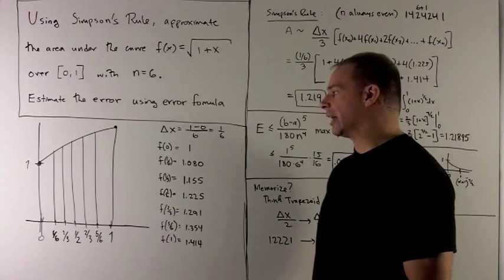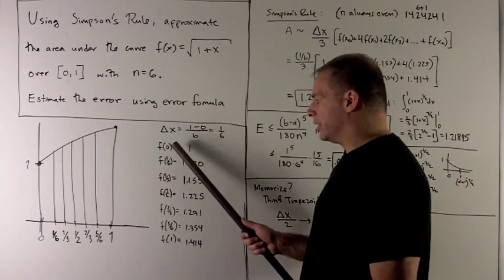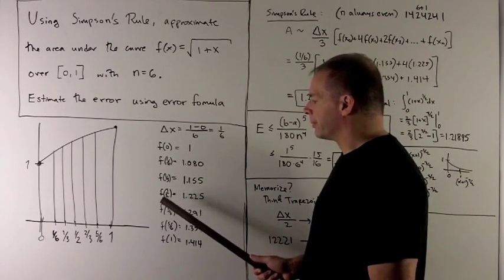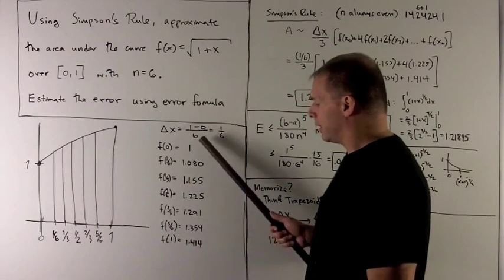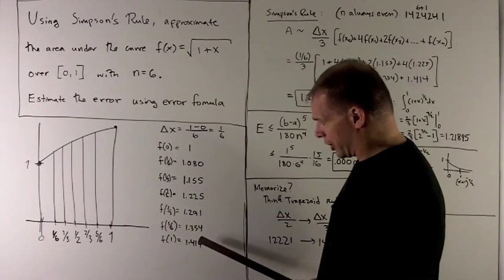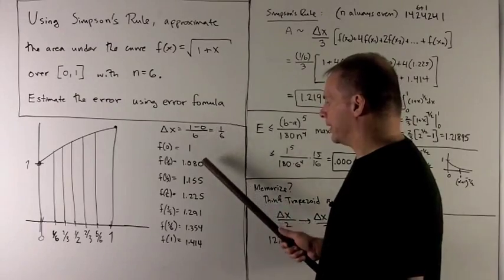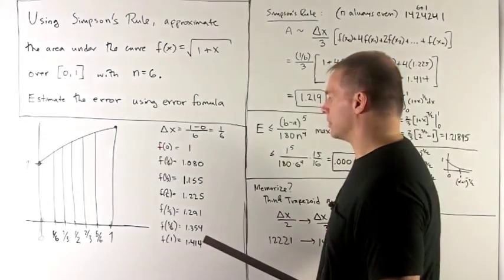I break out the calculator. I evaluate each of those points through f. And then we get all these results here. So this is going to be the list of numbers I'm going to put into Simpson's rule.